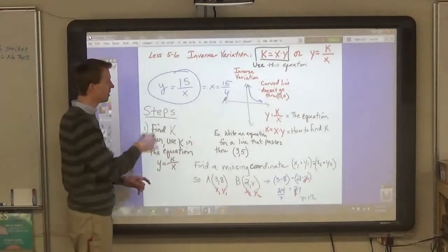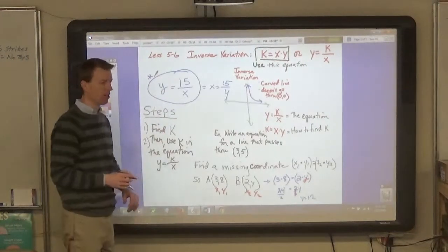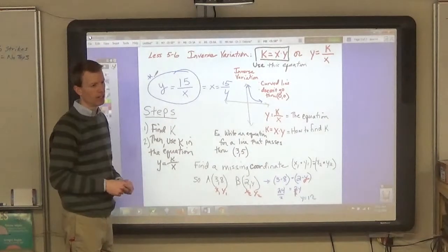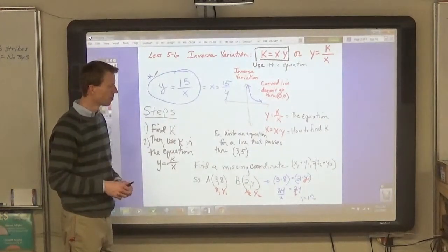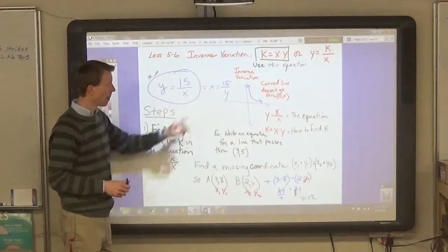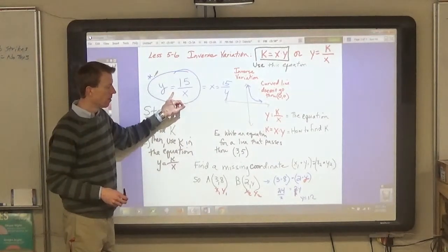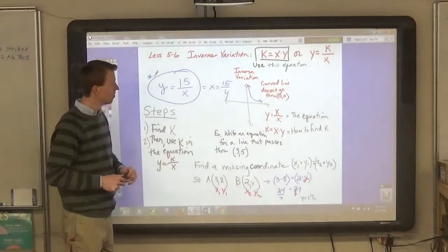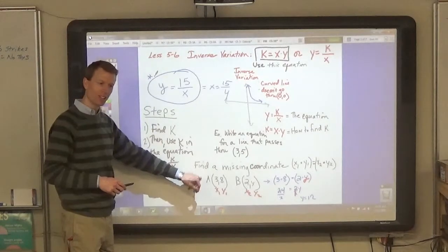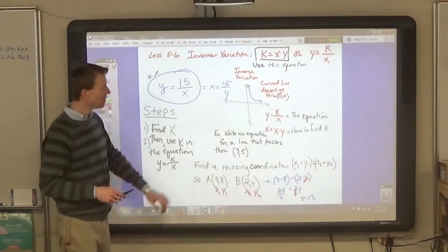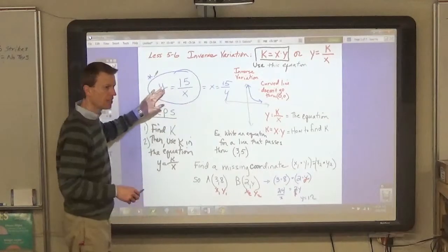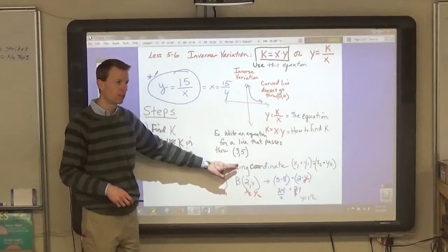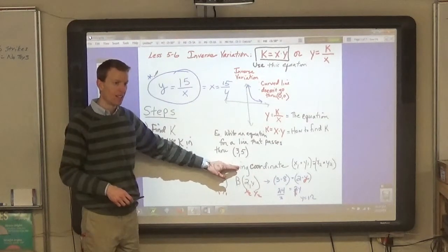Because this is the equation for direct variation, not inverse variation. For inverse variation. So it has to be like that because of the problem down below? Right. Does everyone understand that this is the equation you have to use when you're writing an equation for inverse variation?